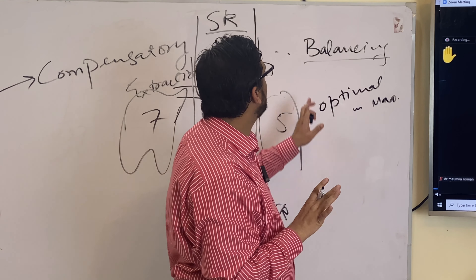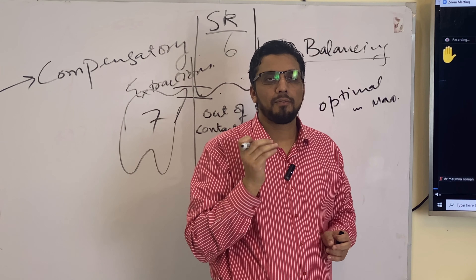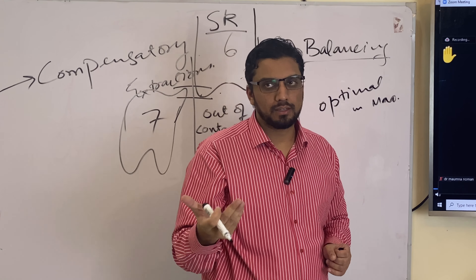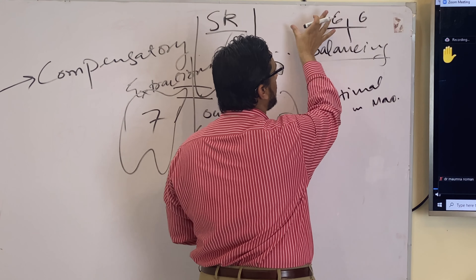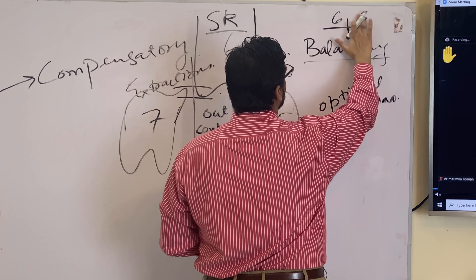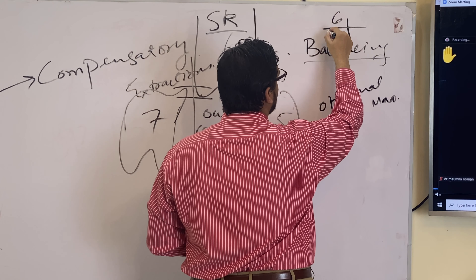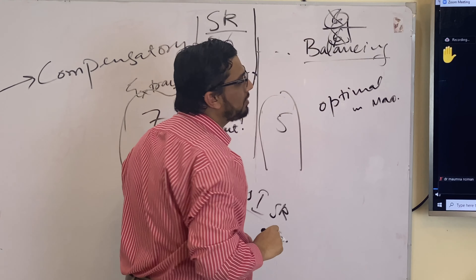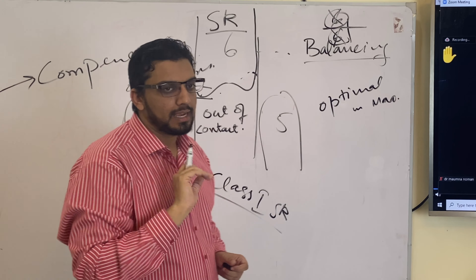In the planning of first permanent molar extraction, balancing extraction is essentially out of question because first molars are quite far from the midline — extraction of the first molar normally does not interfere with the midline. Balancing extraction is done to balance the midlines in cases of bilateral crowding. If you are planning extraction of the lower sixth, you would also do extraction of the upper sixth to prevent supra-eruption of the opposing tooth.